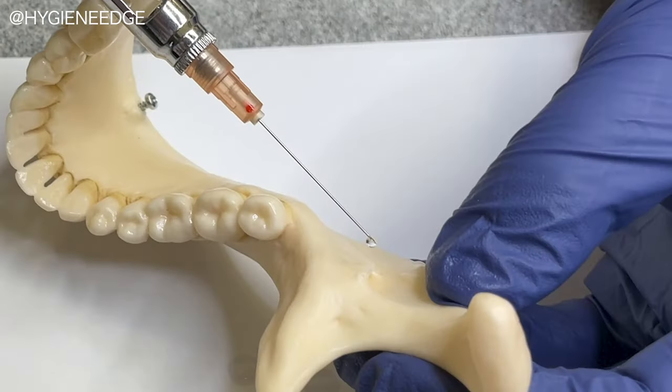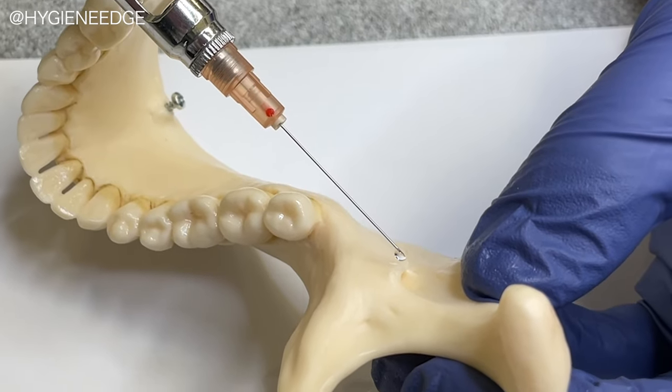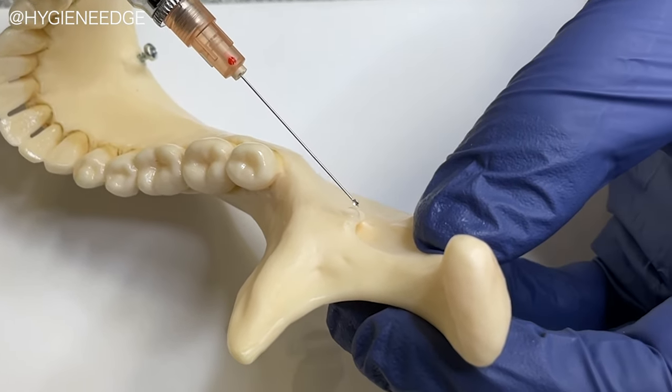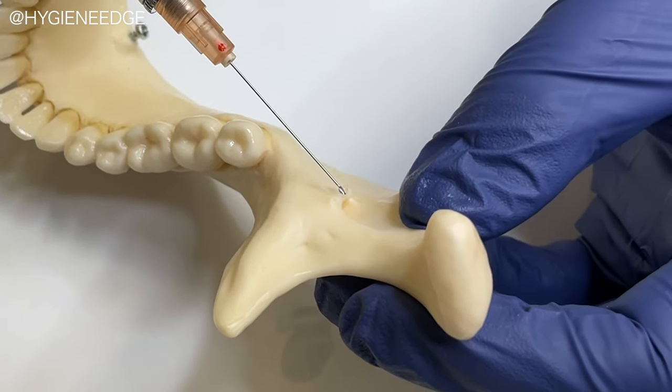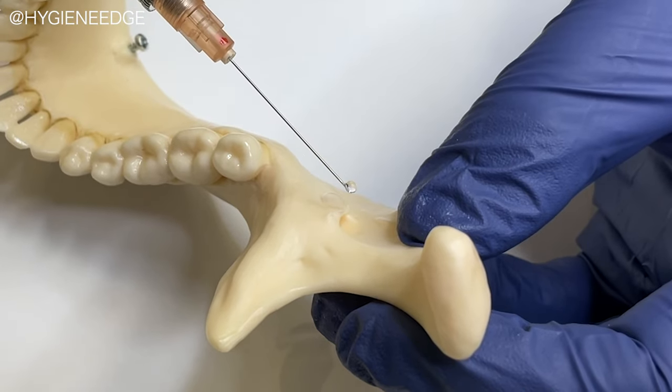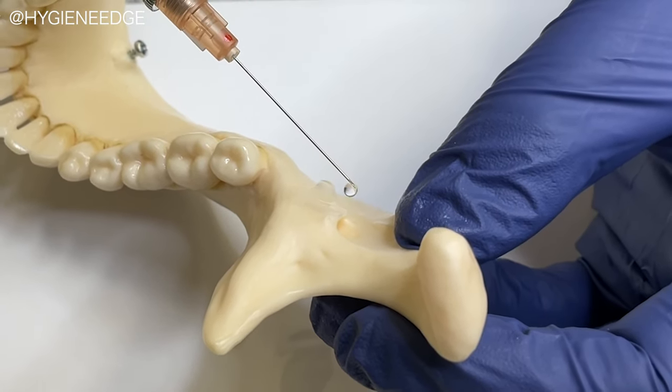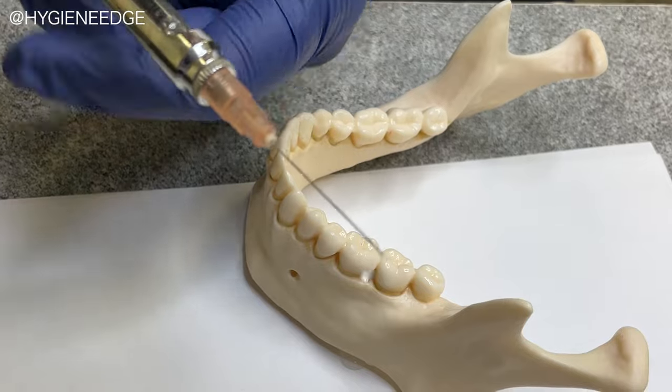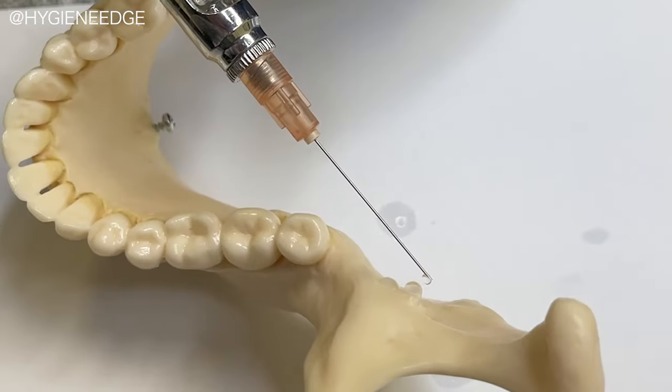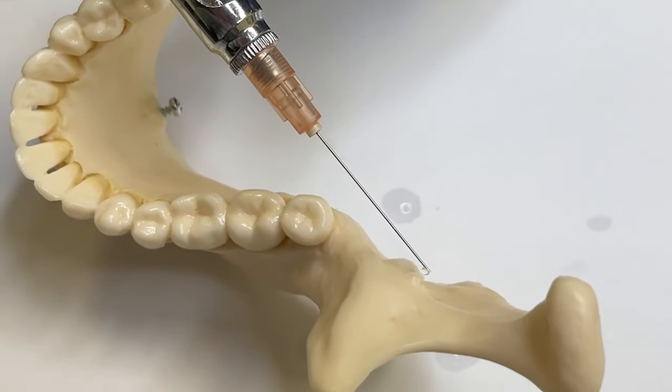So as I give an injection, you want the bevel towards the bone. So if I look right here and I can see that red dot, the bevel is going to be away from the bone. And when I dispense, the liquid's going to be going away from that foramen. But if I do bevel towards the bone, now it's going to dispense towards the foramen. So good. Thank you.